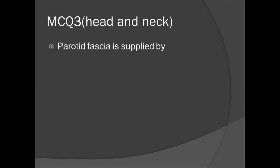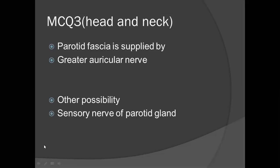Parotid fascia is supplied by the great auricular nerve. This MCQ had five different options and the correct option was that parotid fascia is supplied by the great auricular nerve. You should know this. Another possibility is that they can ask about the sensory nerve of the parotid gland — the answer is the auriculotemporal nerve.